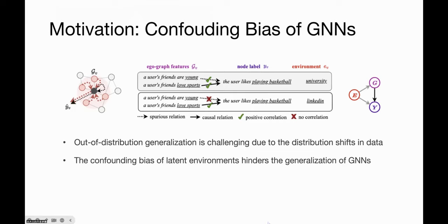But the model would capture the spurious correlation, which plays as a shortcut that would misguide the model to be biased towards training observations. This will lead to the failure of generalization.